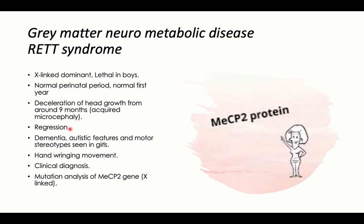Regressive manifestations start in the form of dementia, autistic features, and motor stereotypies. By stereotypies we mean repetitive similar behavior. The most common motor stereotypy in these girls is the hand-wringing movement.